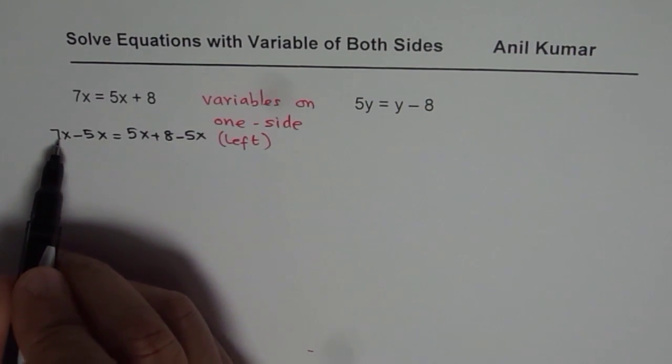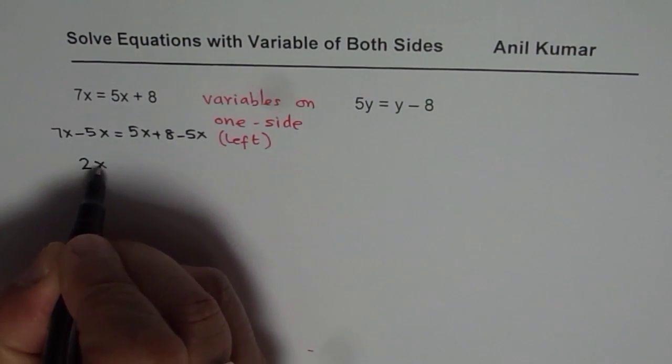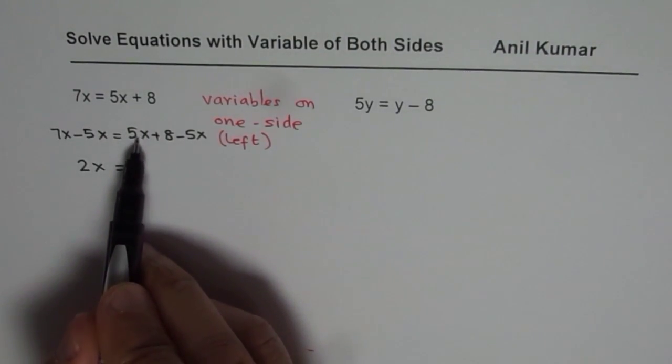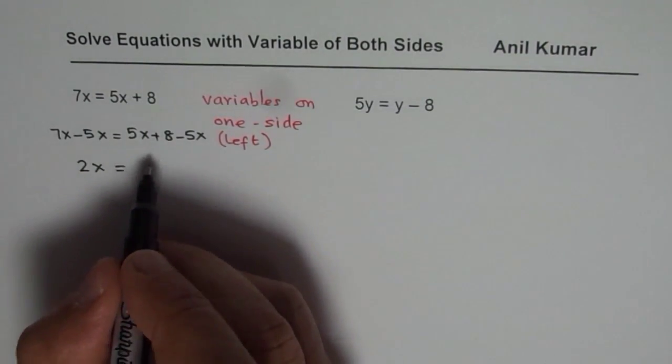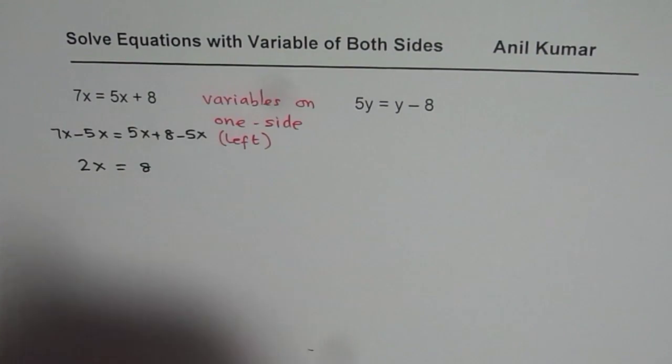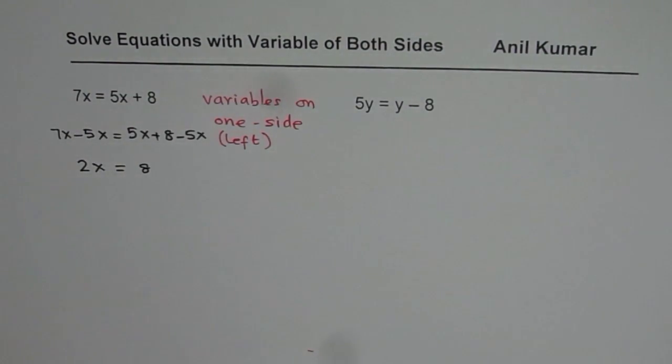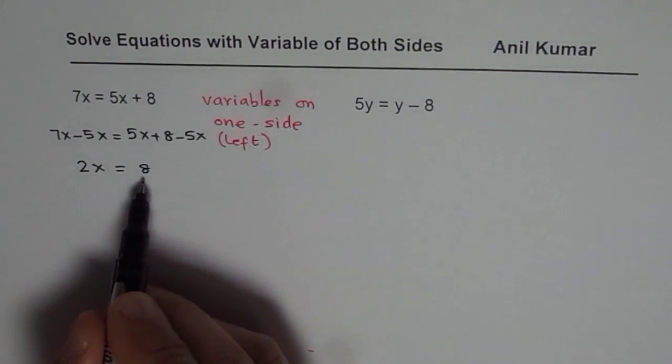You see how 7x minus 5x is 2x. So we get 2x equals 5x minus 5x which is 0. So we do not have any variable on the right side. So that is how you can ensure that you have variables on only one side.